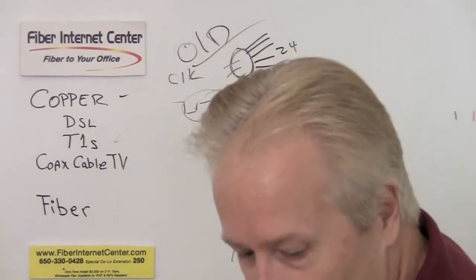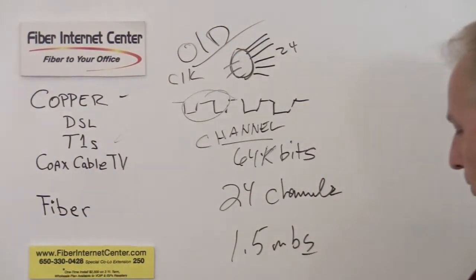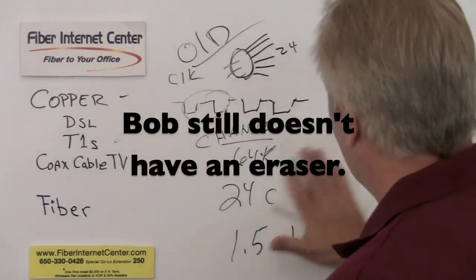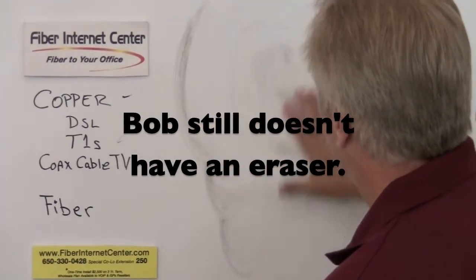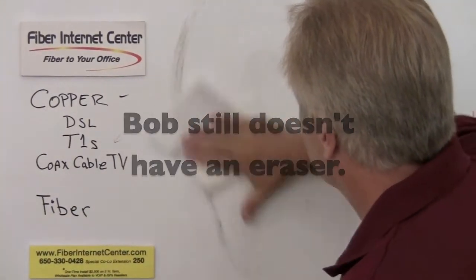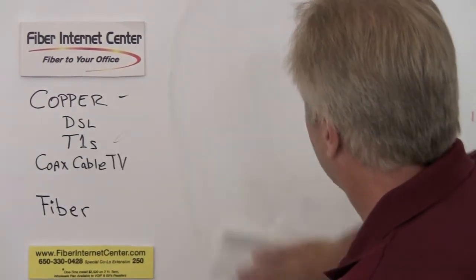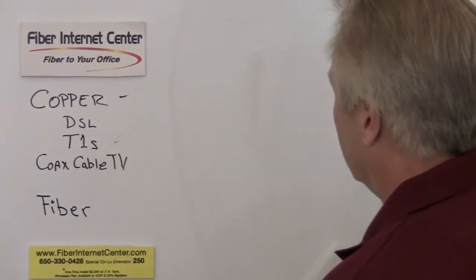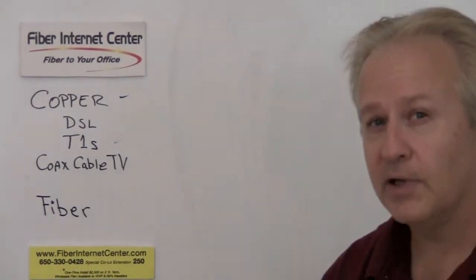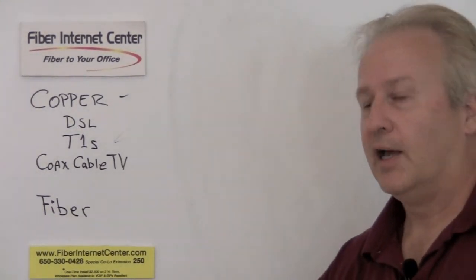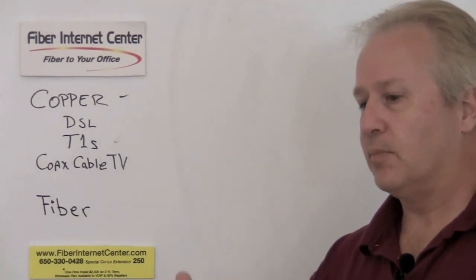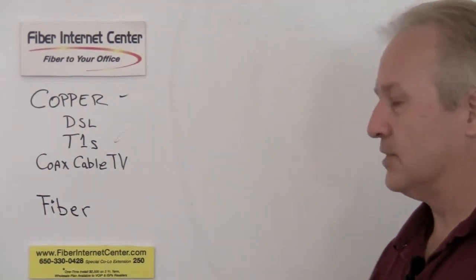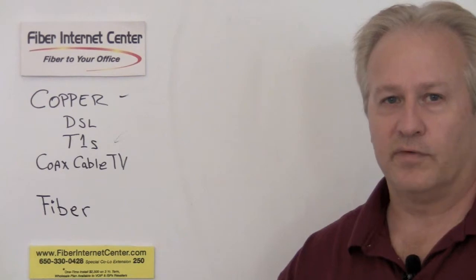Now, what we can do here is the next, we'll go ahead and show you what's wrong with all those. There's also DSL. DSL's got the same kind of problems as the T1 has. Again, it's another topology. It's a little bit different. Electrical interference interferes with it.